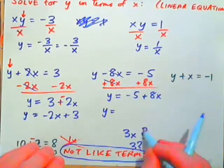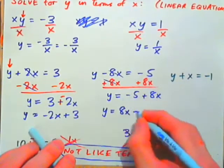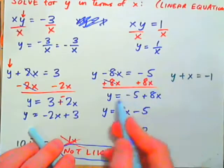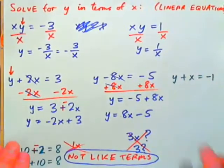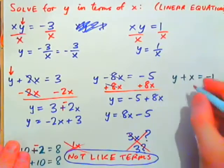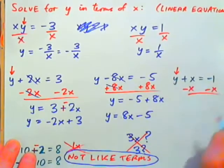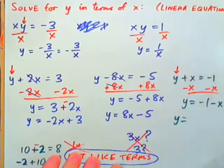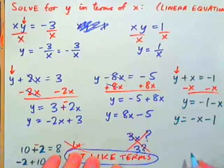This can also be written as positive 8X plus negative 5, or 8X minus 5 — we usually like the X term on the left. Now for the next one: X is being added to Y, so subtract X from both sides. You get Y equals negative 1 minus X, which can also be written with the X term first: negative X minus 1. Same thing.